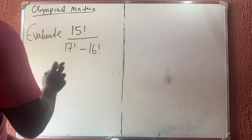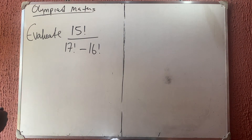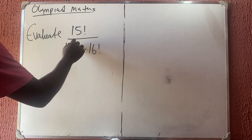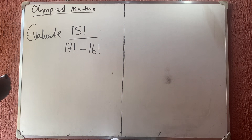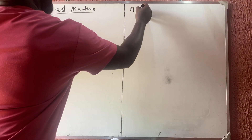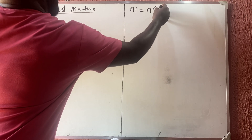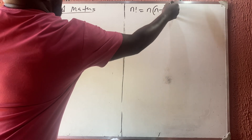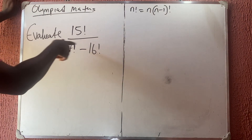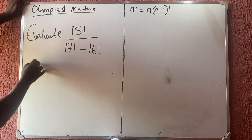Let us quickly solve this olympiad math problem. They gave you 15 factorial all over 17 factorial minus 16 factorial. This is a very simple problem. You should know that n factorial is the same as saying n times n minus 1 factorial. This is the principle behind solving this.